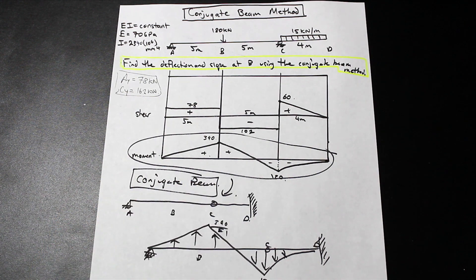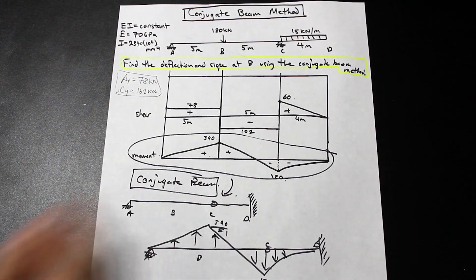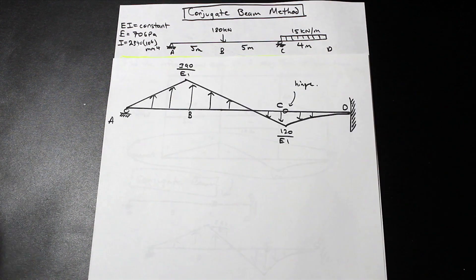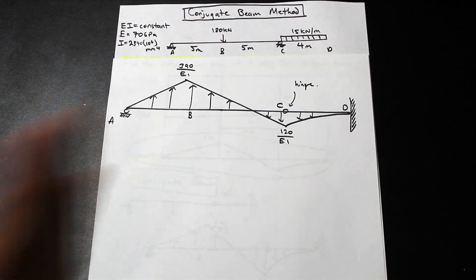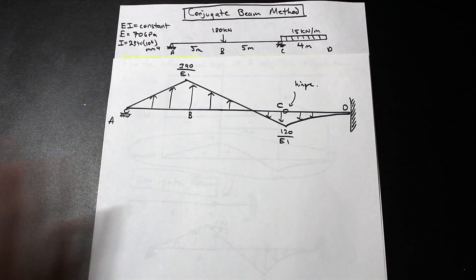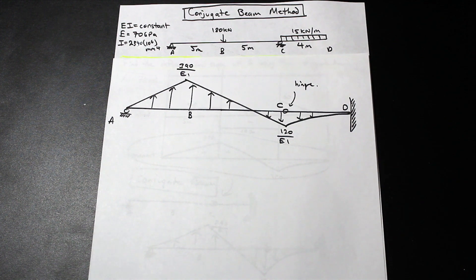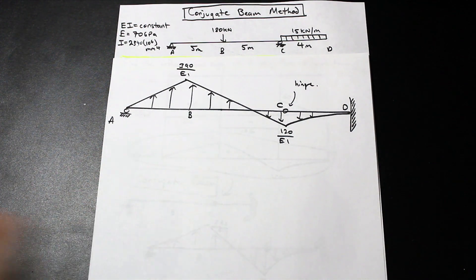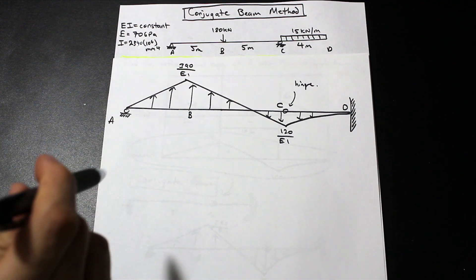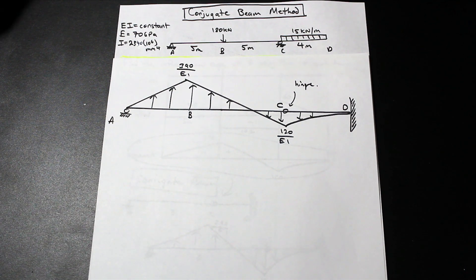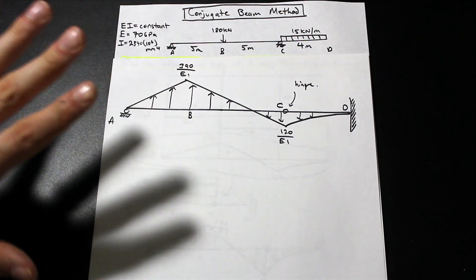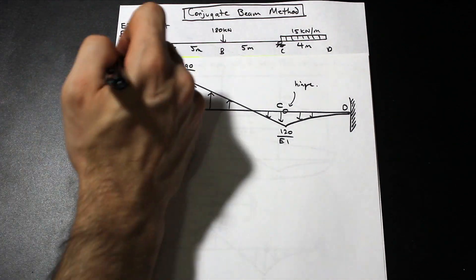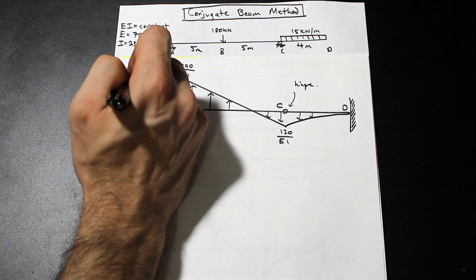So the first step is complete — we've found the conjugate beam for our real beam and placed the M/EI diagram onto it. I've also prepared a clean, larger version of the conjugate beam with the loading. We're going to solve for the slope and deflection at D, so we're looking for the shear and moment at D in the conjugate beam.